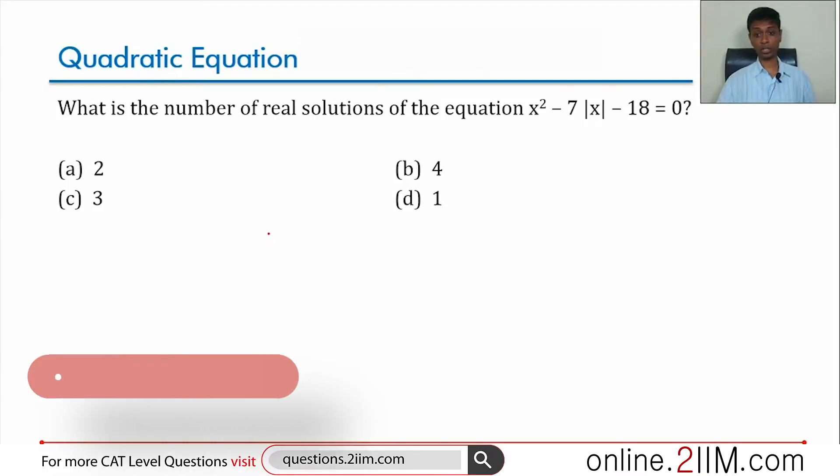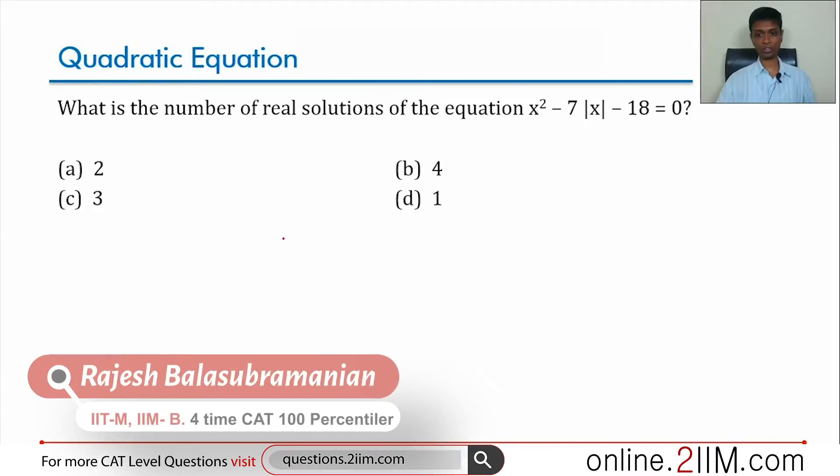What is the number of real solutions in the equation x square minus 7 mod x minus 18 equal to 0?